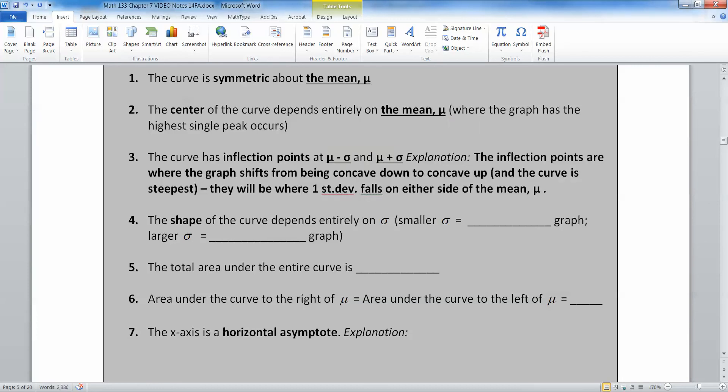There we go. Now, the inflection points are where the graph shifts from being concave down to concave up, and that's where the curve is its steepest. They will always be where one standard deviation falls on either side of the mean. Right? Because you have a standard deviation on the left and a standard deviation on the right, they will be exactly the same distance. So if your standard deviation is 10, that's where it falls. 10 to the right, 10 to the left.